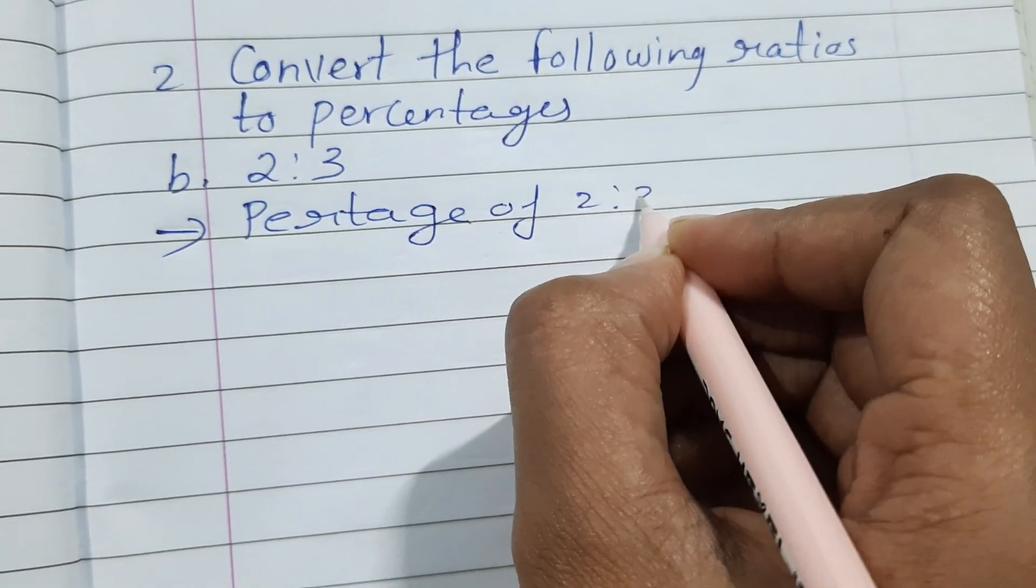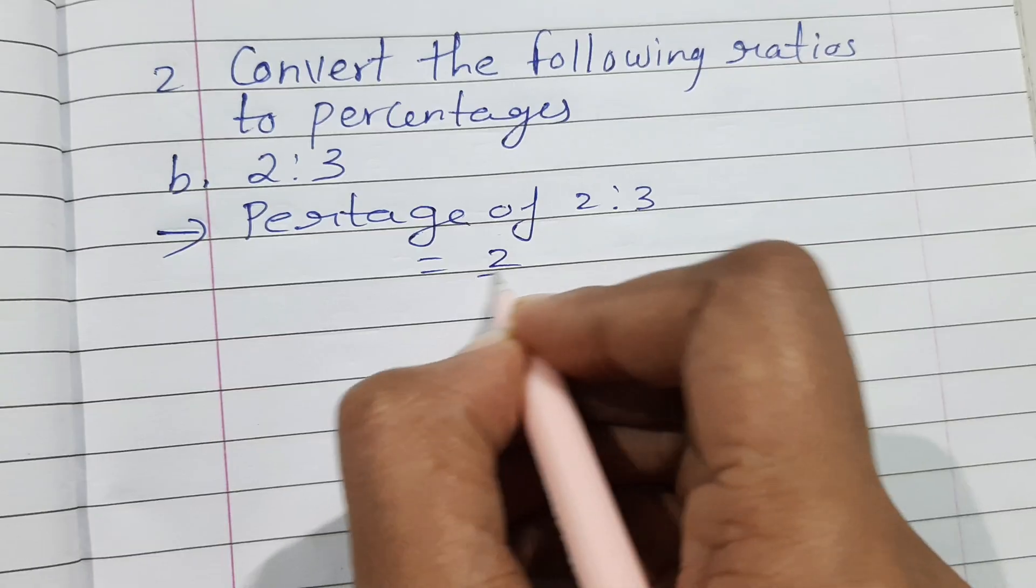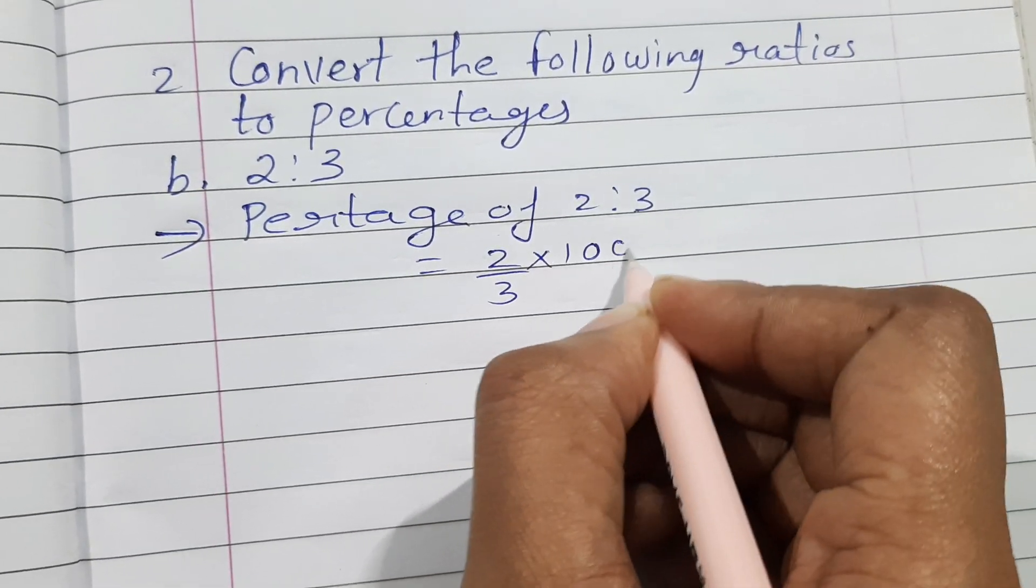Of 2 is to 3 is equal to 2 upon 3 multiplied by 100. You all have to do.